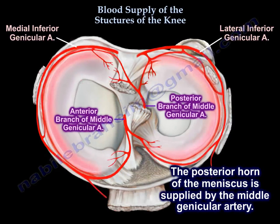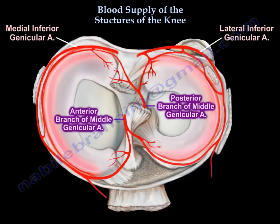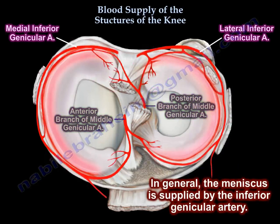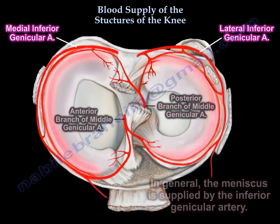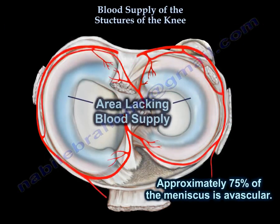The posterior horn of the meniscus is also supplied by the middle genicular artery, but in general the meniscus is supplied by the inferior genicular arteries. Approximately 75 percent of the meniscus is avascular.